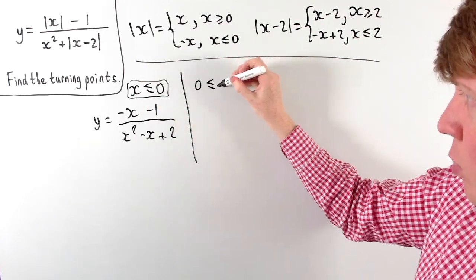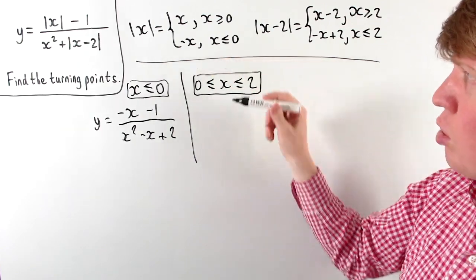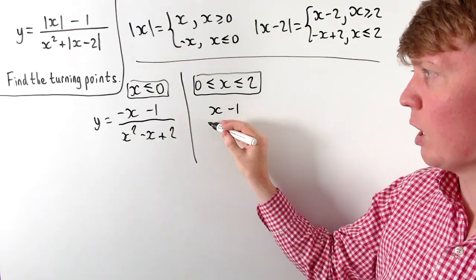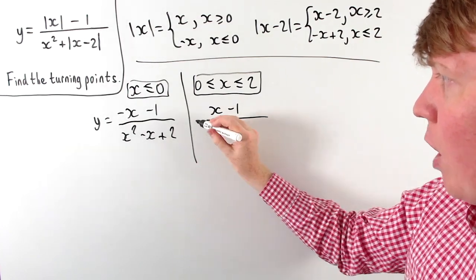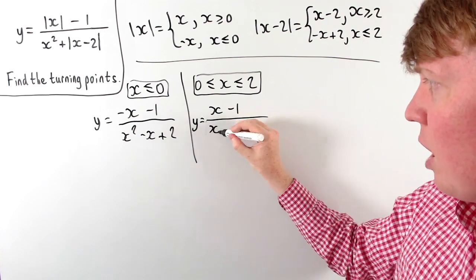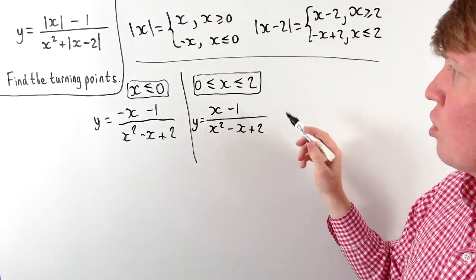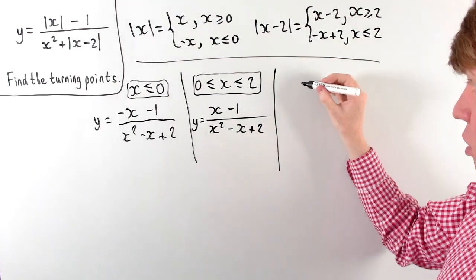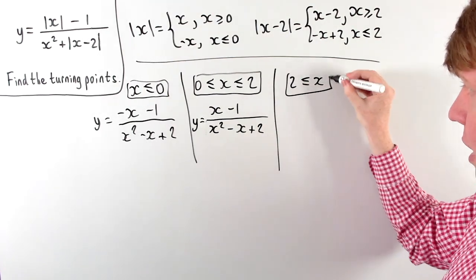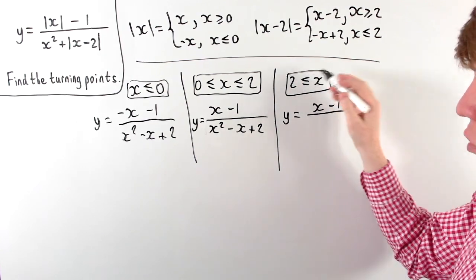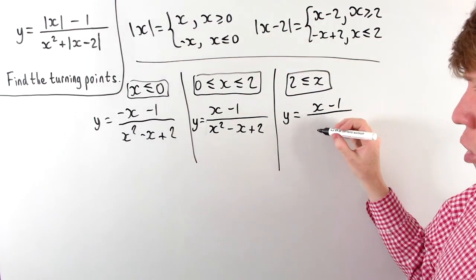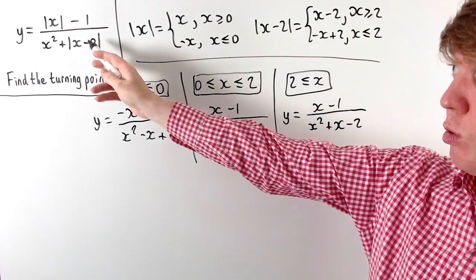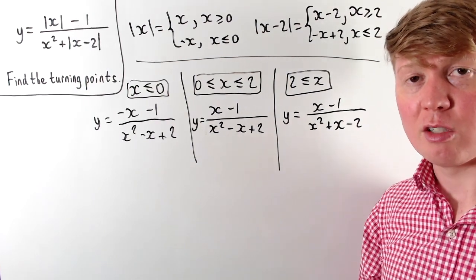When x is between 0 and 2, the numerator becomes x minus 1 rather than negative x minus 1, but the denominator stays as x squared minus x plus 2. Finally, for x greater than or equal to 2, the numerator remains x minus 1 and the denominator becomes x squared plus x minus 2, since both moduli are now positive.